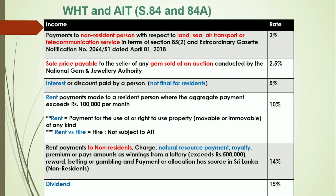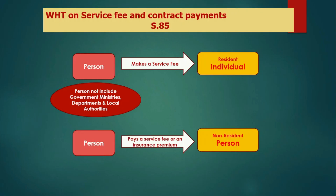The final item under this section is dividend declared by a resident company. You have to deduct 15% withholding tax on dividend payments.